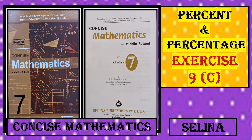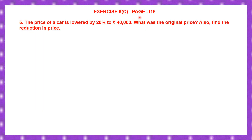Hello students, let's do percent and percentage exercise 9c, page number 116, question 5. The price of a car is lowered by 20% to 40,000 rupees. Lowered means reduced or decreased to 40,000 rupees. So what was the original price? The price of the car was something else in the beginning but it was lowered by 20% and now the reduced price is 40,000 rupees. Also find the reduction in price.